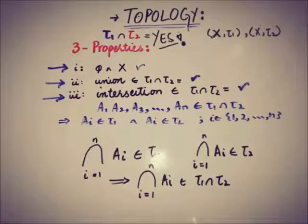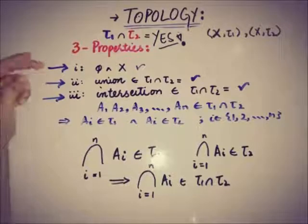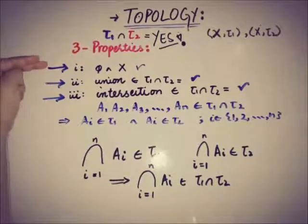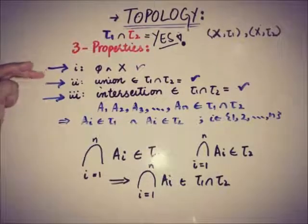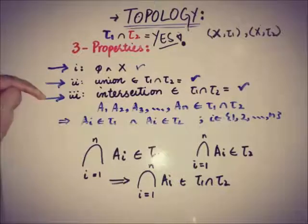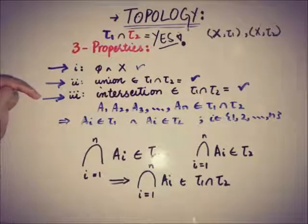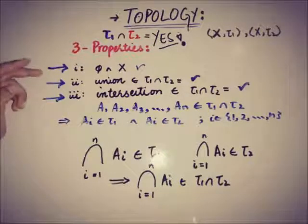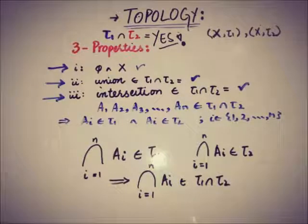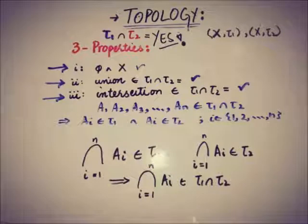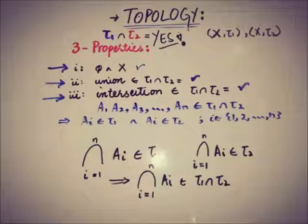In this proof we have verified the three properties: first is about φ and the set X, the second is about arbitrary unions, and the third is about finite intersections. In the next video we will meet with another interesting new topic. Till then, take care, goodbye.